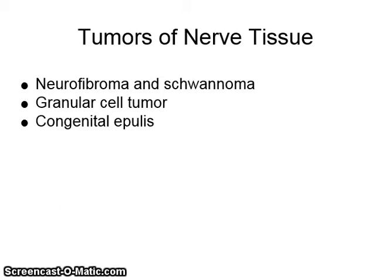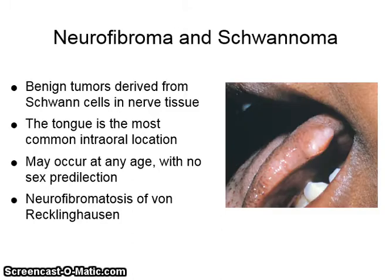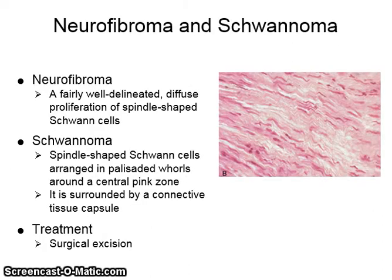Tumors of nerve tissue include neurofibroma and schwannoma, granular cell tumor, and congenital epulis. Neurofibroma and schwannoma are benign tumors derived from Schwann cells in nerve tissue. The tongue is the most common intraoral location. They may occur at any age with no sex predilection. Neurofibromatosis of von Recklinghausen is an example. Neurofibroma shows a fairly well-delineated diffuse proliferation of spindle-shaped Schwann cells. Schwannoma shows spindle-shaped Schwann cells arranged in palisaded whorls around a central pink zone. It is surrounded by a connective tissue capsule and is treated with surgical excision.